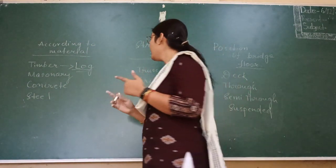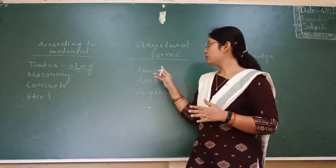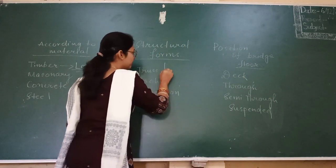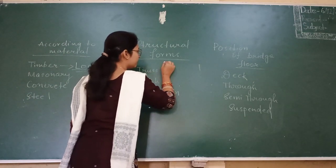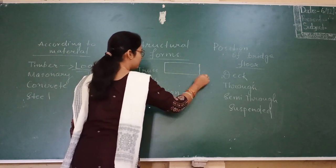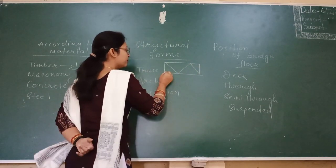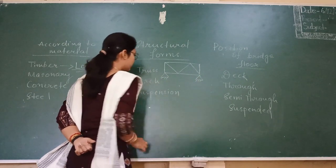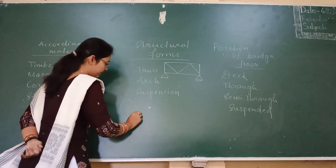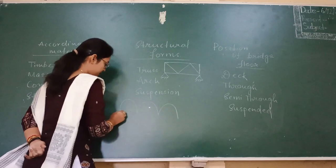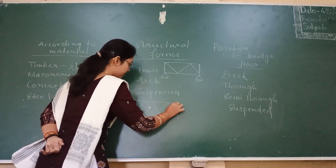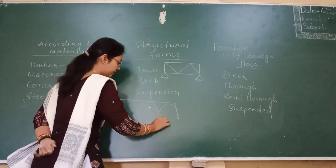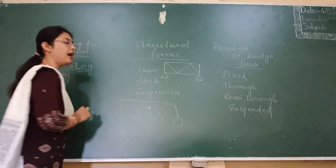Then gradually we started making masonry bridges, steel bridges and concrete bridges. Next, in the structural form of the bridge we have truss bridge, arch bridge and suspension bridge. This kind of structure is known as truss bridge. Then arch bridge — you have seen this kind of arch shape with boards over it — this is known as arch bridge.